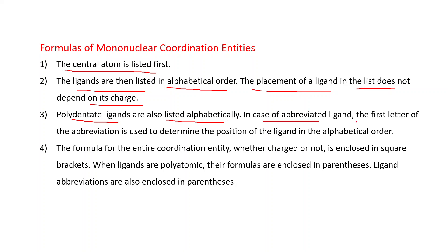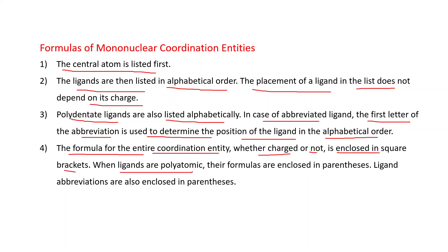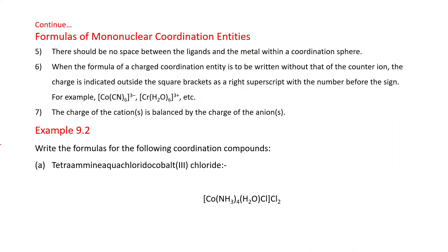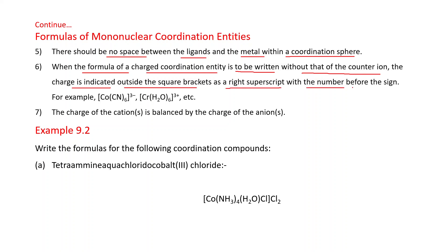In the case of an abbreviated ligand, the first letter of the abbreviation is used to determine its position in alphabetical order. The formula for the entire coordination entity, whether charged or not, is enclosed in square brackets. When ligands are polyatomic, their formulas are enclosed in parentheses. Ligand abbreviations are also enclosed in parentheses. There should be no space between the ligands and the metal within a coordination sphere. When the formula of a charged coordination entity is written without the counter ion, the charge is indicated outside the square brackets as a right superscript with the number before the sign.